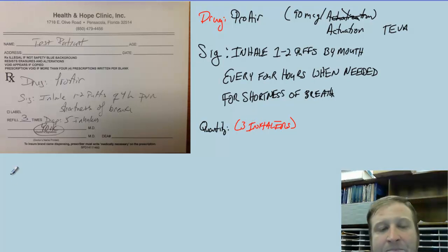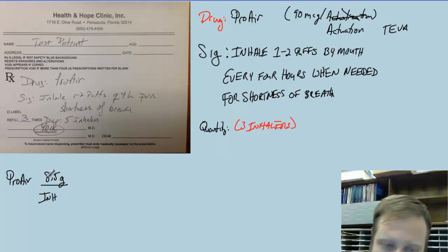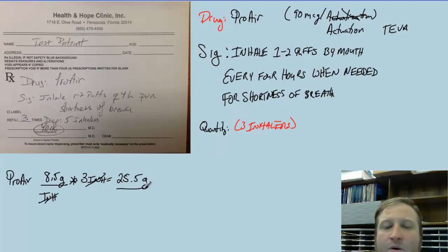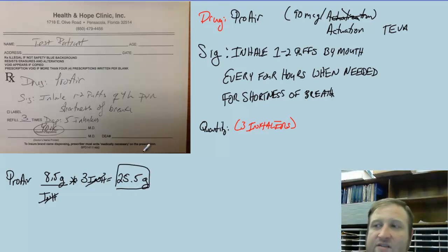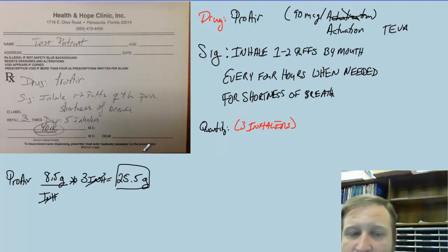A ProAir HFA has 8.5 grams per inhaler — that's the mass. So we will multiply this times the value of three inhalers, and this will give me a quantity of 25.5 grams. And unlike insulins where we can't get a half unit, 25.5 grams is the correct quantity we're going to use for the ProAir.